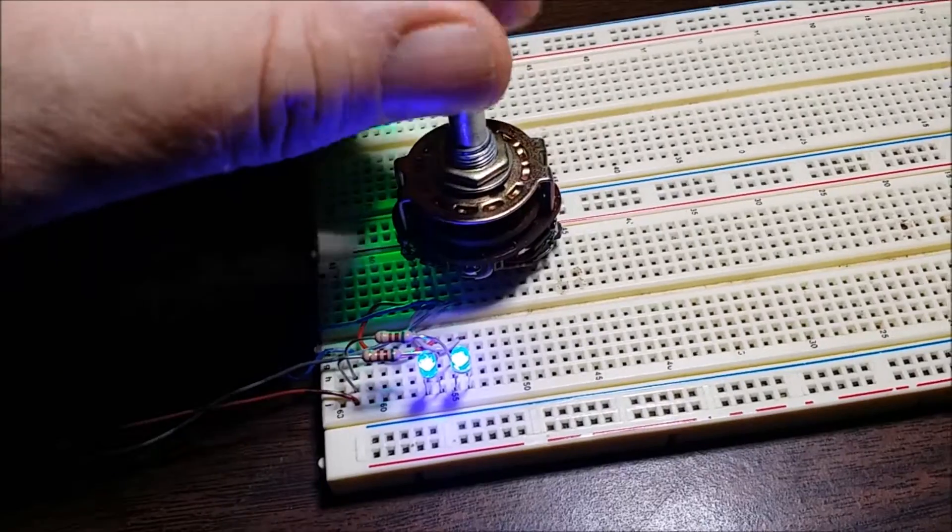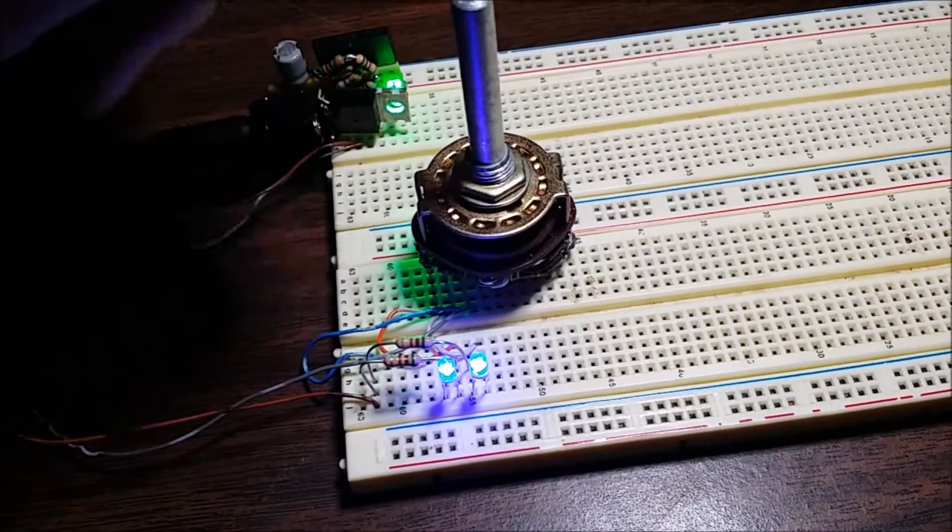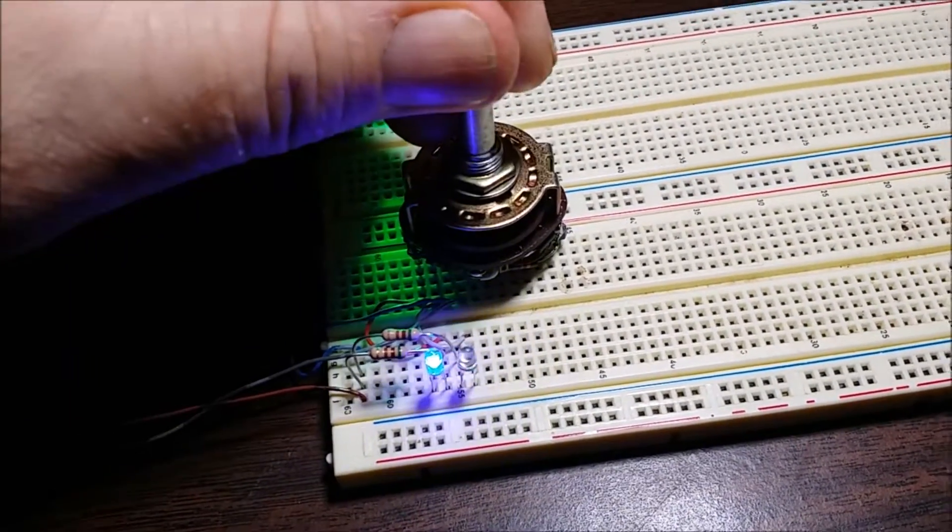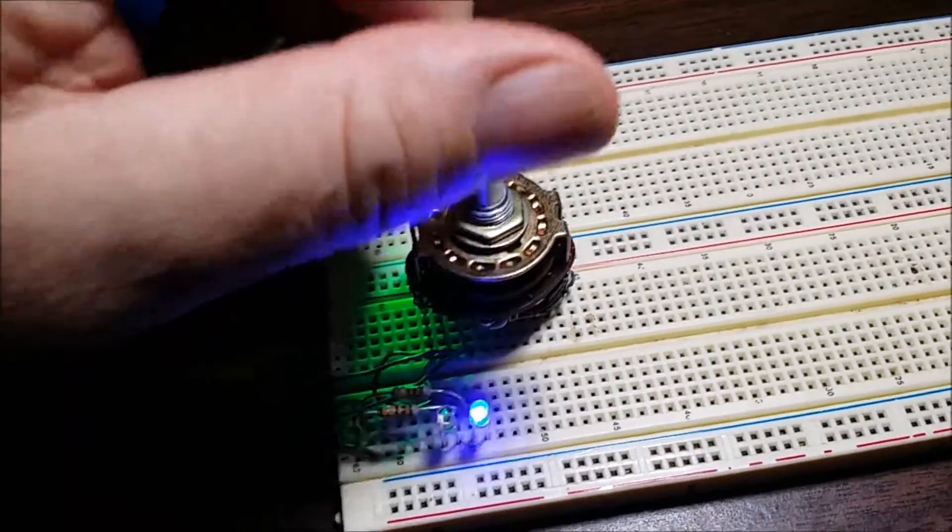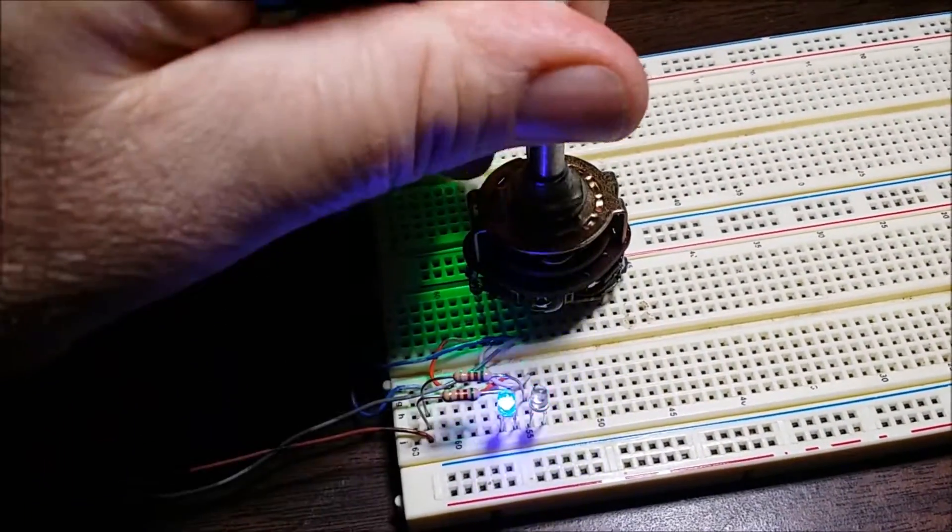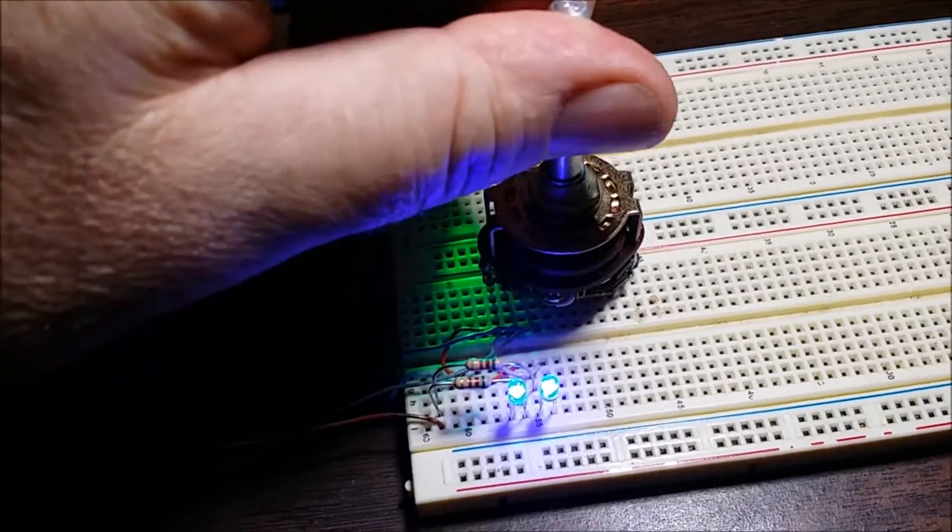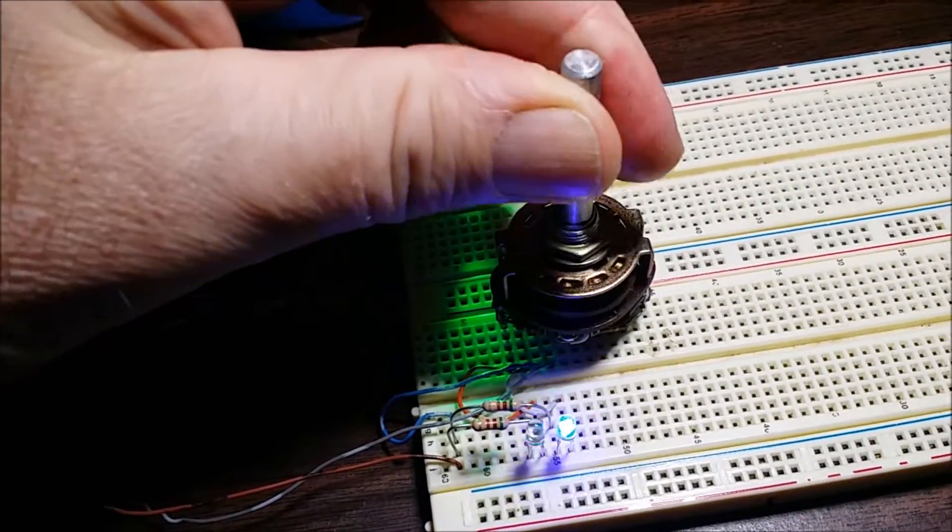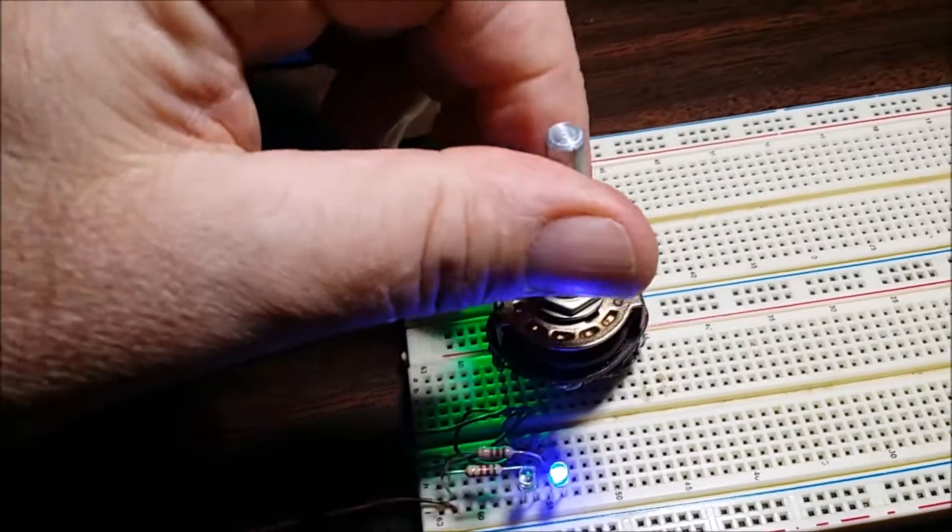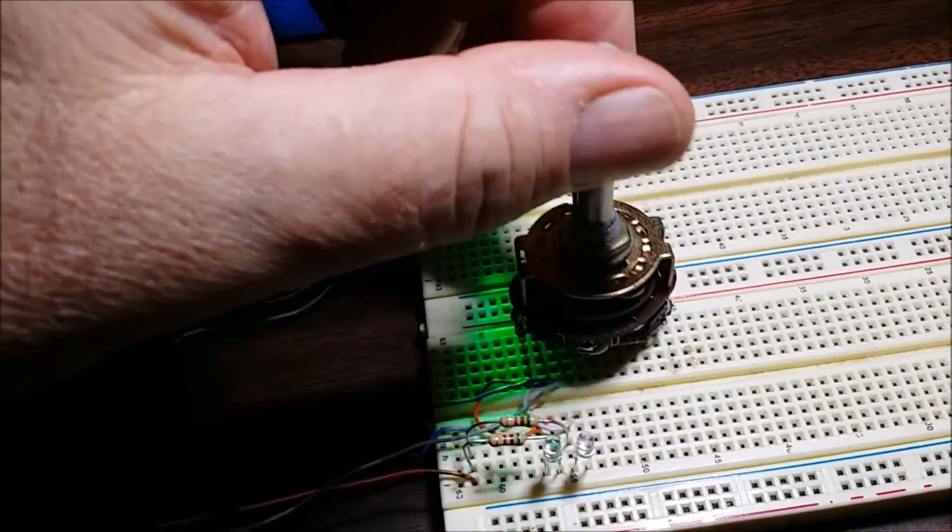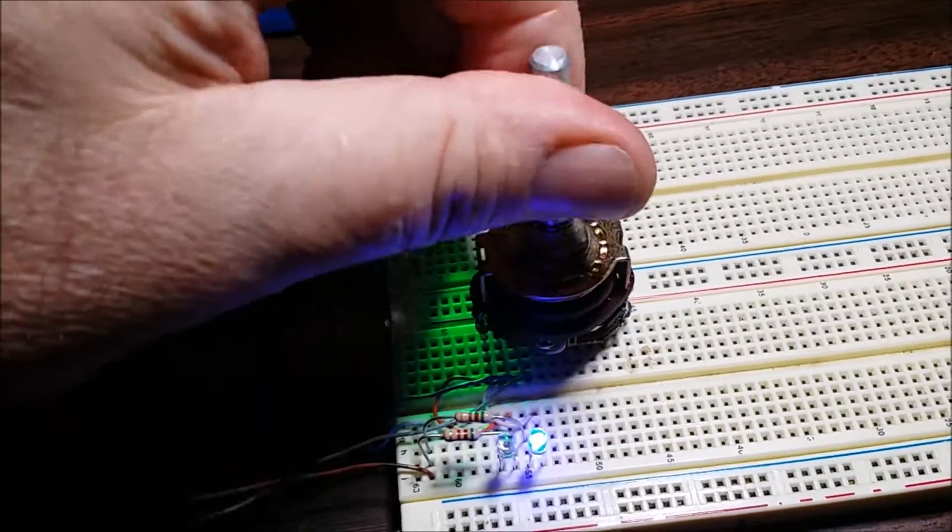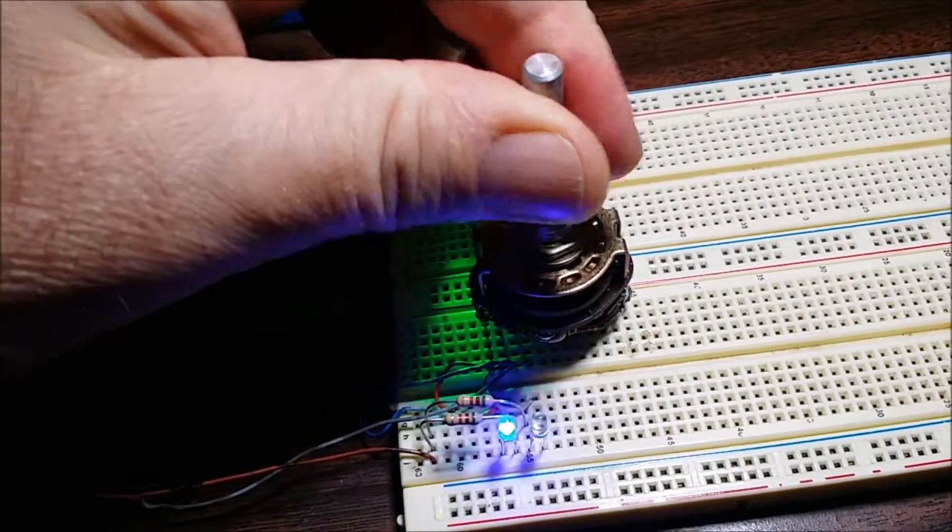Sometimes they have two wiper arms. You just have to see what you have. These switches are used, an encoder switch is used to detect rotation direction, not positional like the rotary switch was where it had to be in a certain detent. These just want to know which way you're rotating the knob.